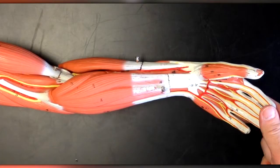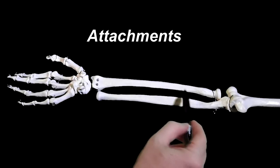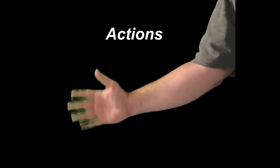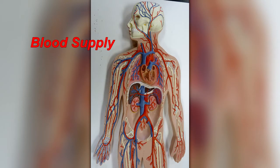In this video, we'll look at the anterior superficial forearm muscles, their attachments, actions, innervations, and blood supply.